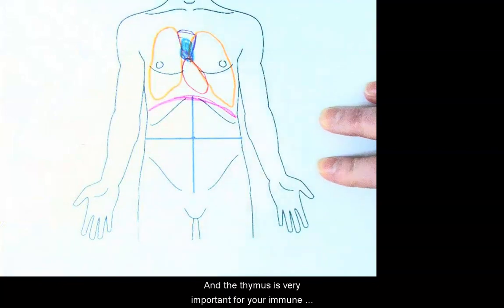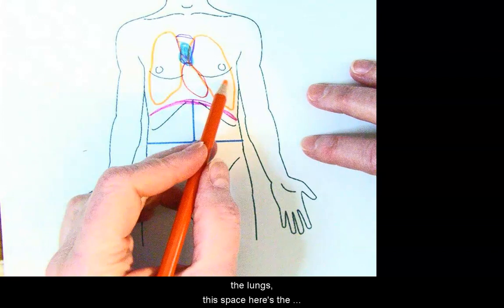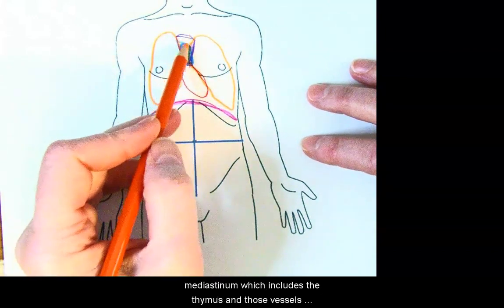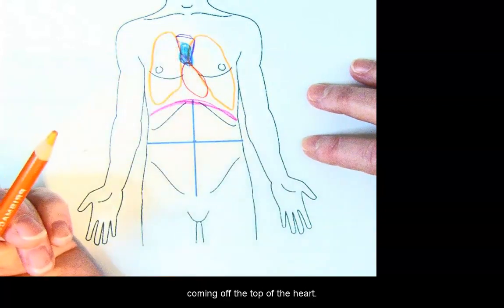And the thymus is very important for your immune system. So again, we have the heart, the lungs, the space here is the mediastinum, which includes the thymus and those vessels coming off the top of the heart.